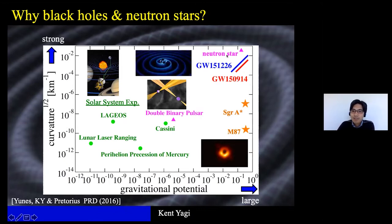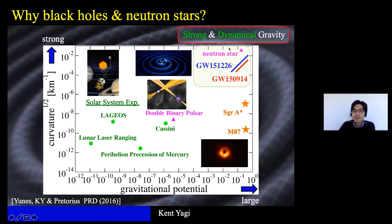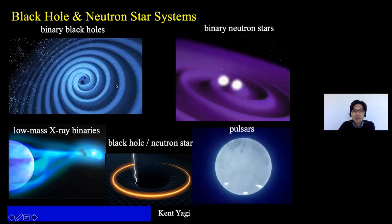Gravitational wave sources — here I show the first event and the second event — they lie in the top right corner, meaning that they are truly strong-field sources. Moreover, they are represented by lines, which means that within the observation period of 0.1 to 1 second, these systems swept through all of that range, meaning these sources are not just strong-field but also dynamical. This is what distinguishes gravitational wave sources from all other sources. So I'd like to use these — binary black holes, binary neutron stars, or even black hole–neutron star events — together with electromagnetic observations.